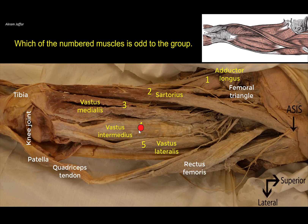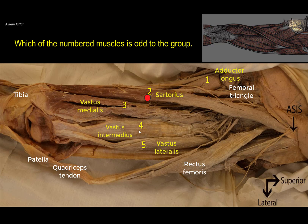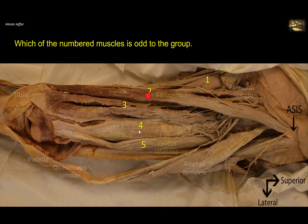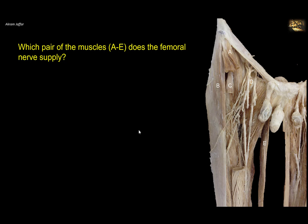We can also add that the adductor longus acts only on the hip joint — it doesn't act on the knee — while these muscles, two, three, and four, all act on the knee joint. These are extensors of the knee, while the sartorius is a flexor and a medial rotator of the flexed knee.